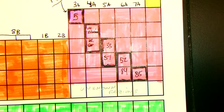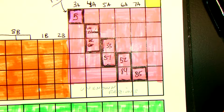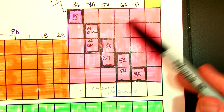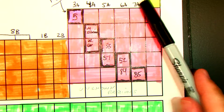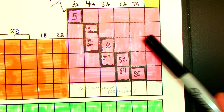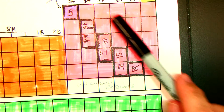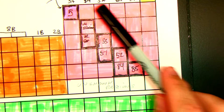Metalloids have some characteristics of metals and some characteristics of non-metals. These elements over here are all your non-metals, and everything else is a metal.